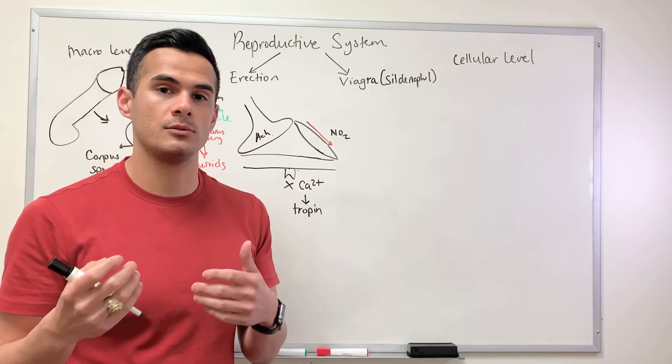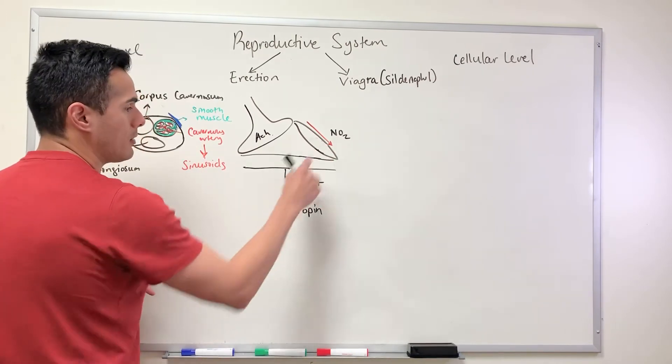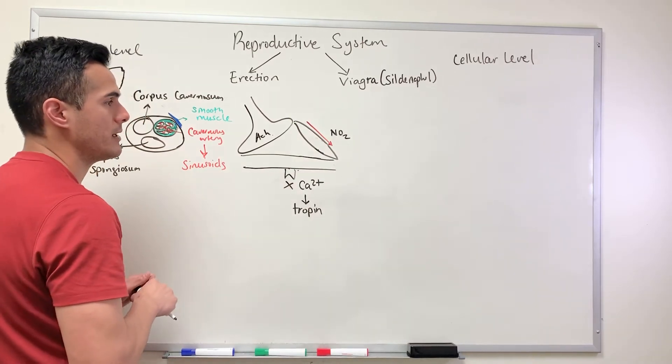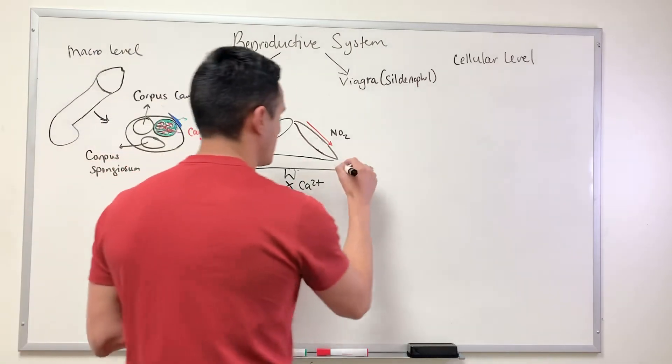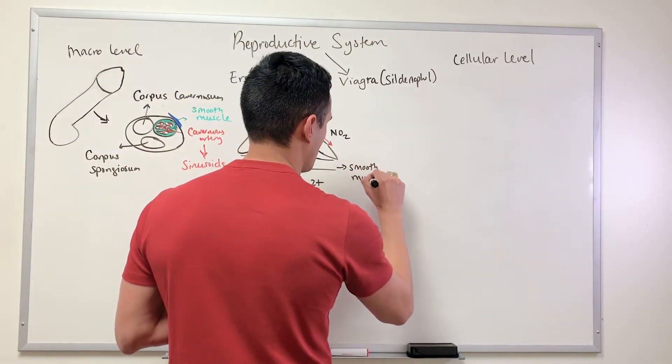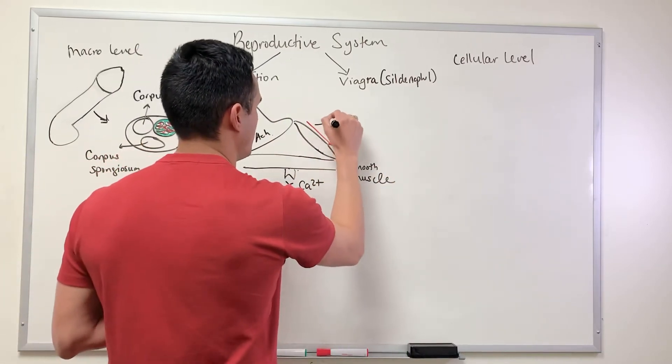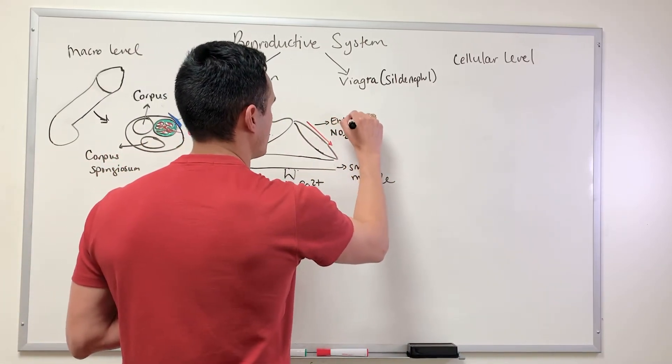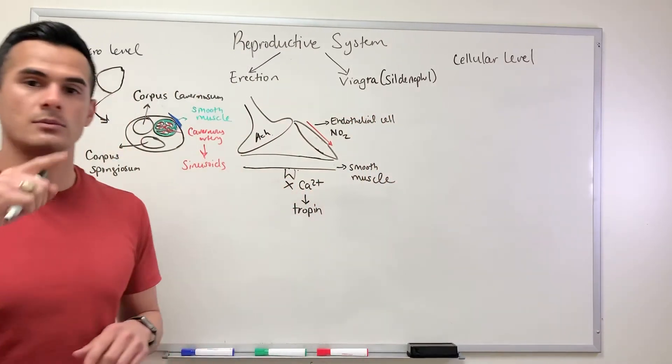What about nitric oxide? Where is this coming from? This here is the smooth muscle, and what I have drawn here is the endothelial cell. The endothelial cell is what lines the blood vessel.